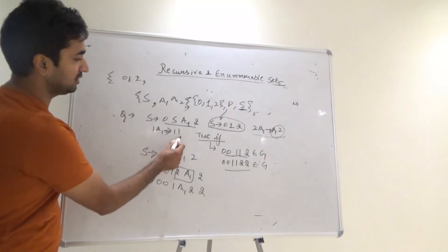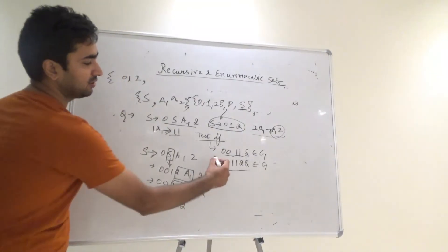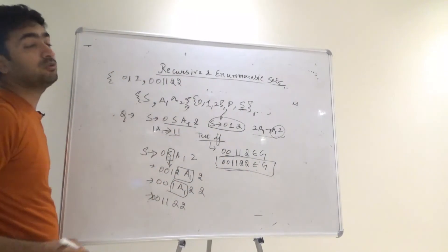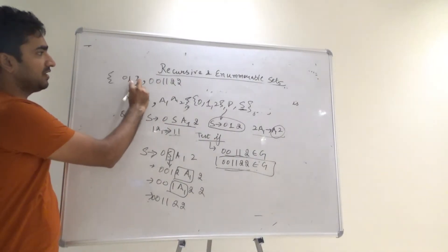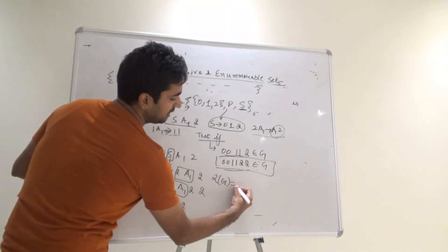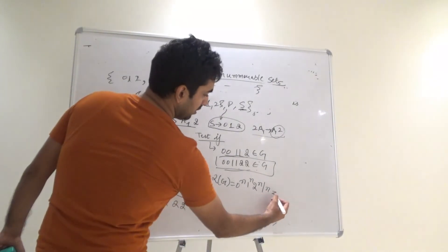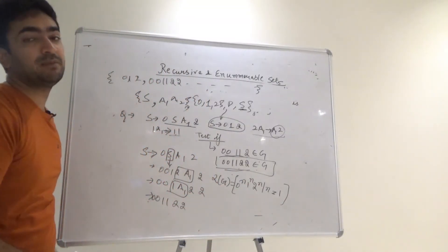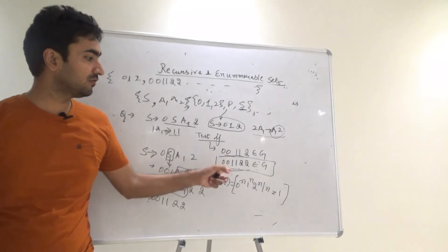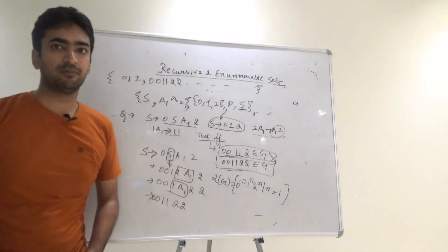Also, 1 A1 → double 1. If we apply that, we clearly get double 0, double 1, double 2 — that is 0 0 1 1 2 2. So there is a procedure to find that 0 0 1 1 2 2 belongs to this language. We can observe the pattern: 1 zero, 1 one, 1 two; then 2 zeros, 2 ones, 2 twos. So the language is 0^n 1^n 2^n where n ≥ 1. Clearly this is a recursively enumerable language, and 0 0 1 1 2 will never belong to it since that string was never produced by our procedure.